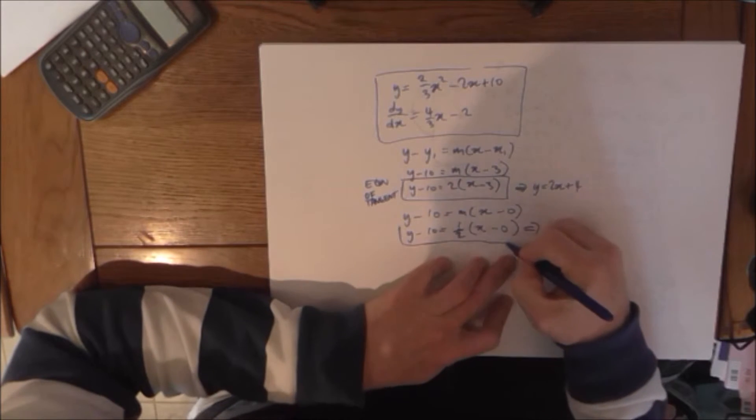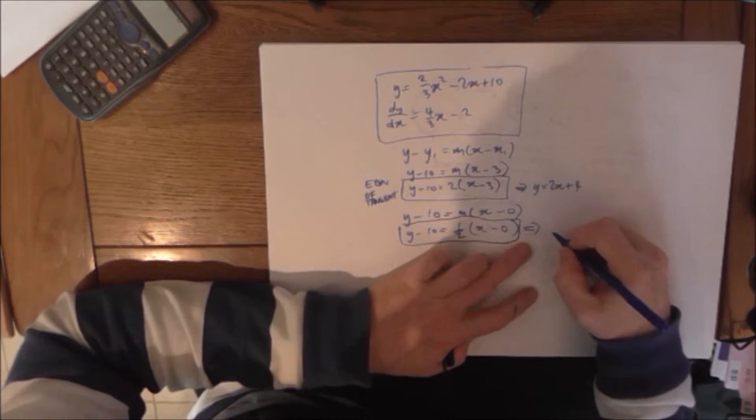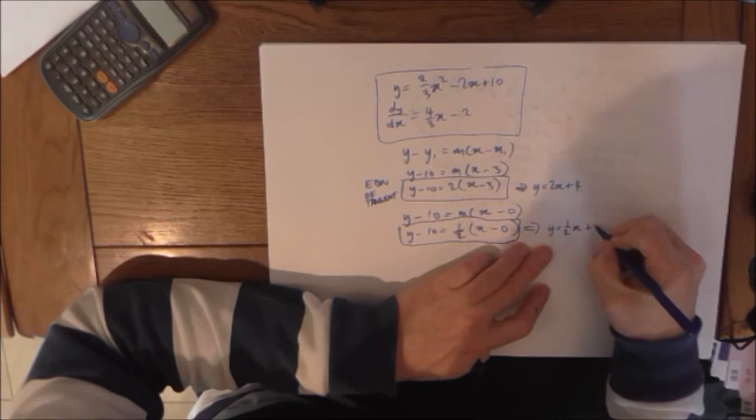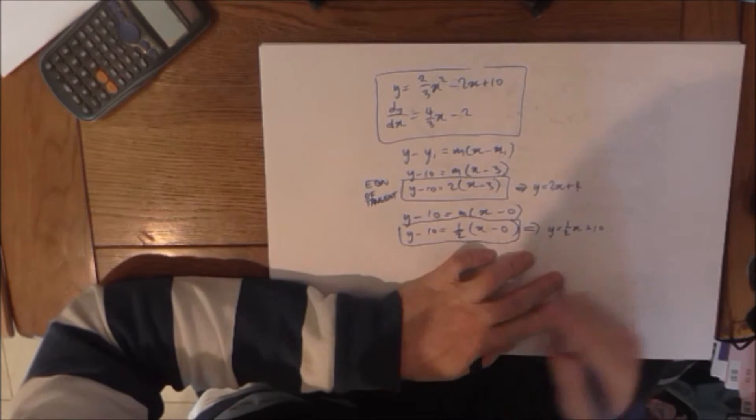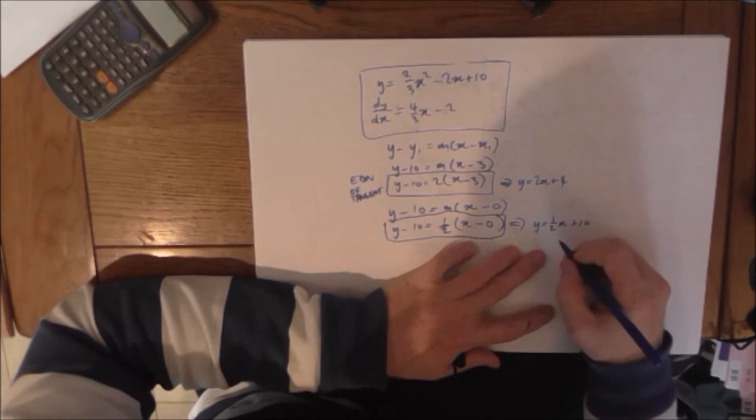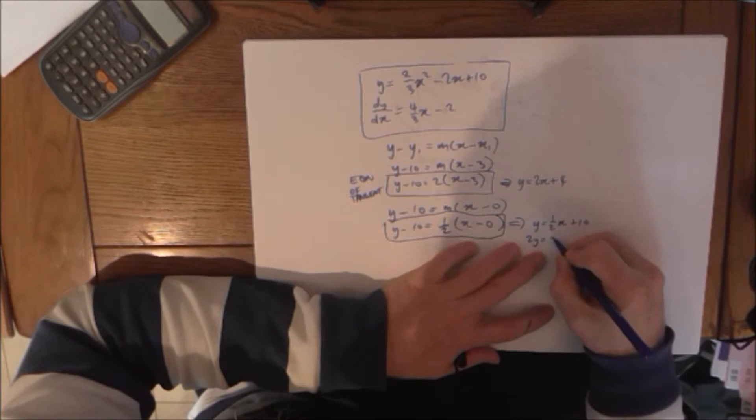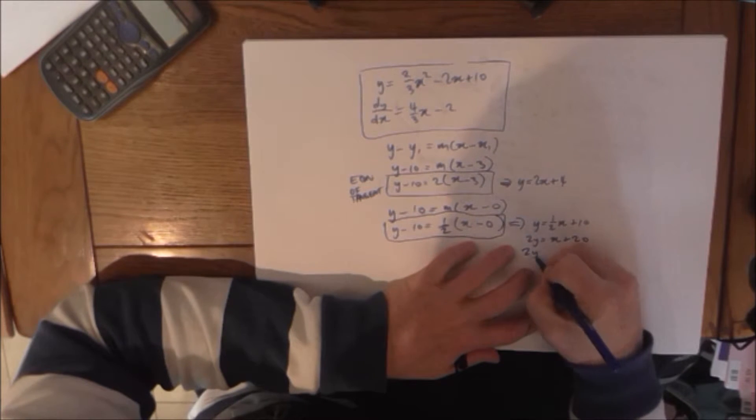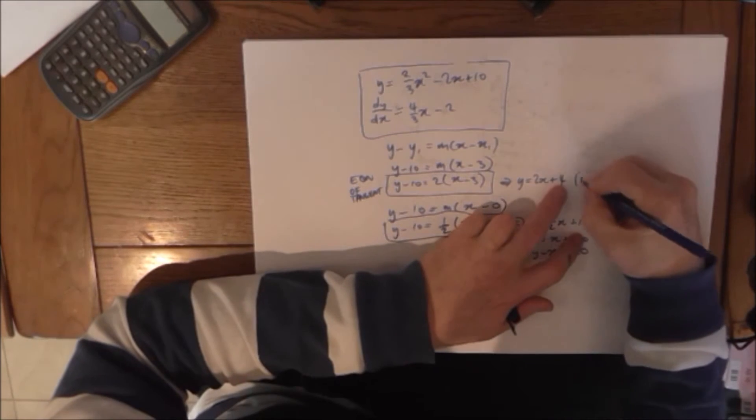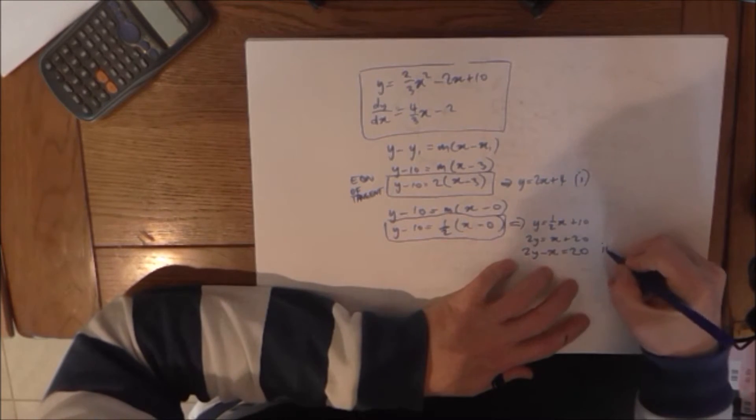So that's the equation of the normal. Tidy that up, you get y equals half x plus 10. It wants us, for full marks, to show that that's the same as 2y minus x equals 20. Just double everything. So that's Roman numeral part 1, that's Roman numeral part 2.